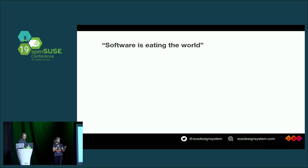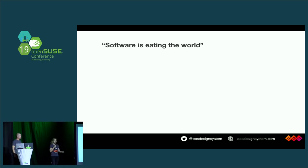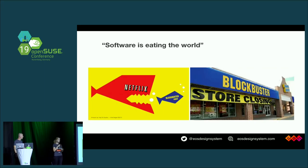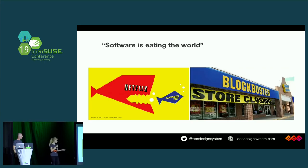Today, we cannot do a lot of things without software — this phrase is reality. Without software, we cannot really do our daily tasks and not even work at all. One of the things that happened when that phrase was published in the Wall Street Journal: Blockbuster was actually collapsing right then, and Netflix was eating Blockbuster. The industry was really being disruptive.